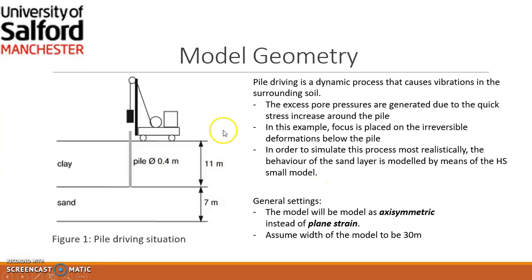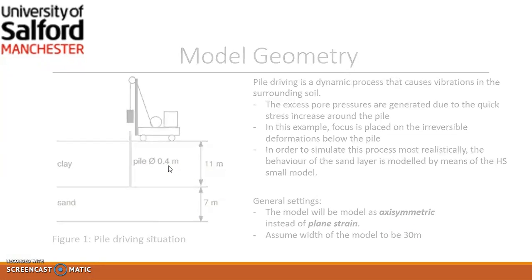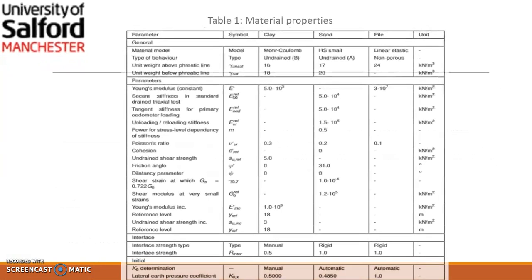Because we have a depth dimension of 80 meters, we are going to assume the width of the model to be 30 meters. Our pile diameter is 0.4 meters. Table 1 shows our properties for clay, sand, and pile.